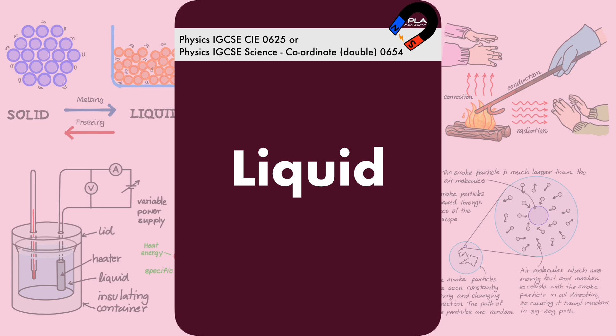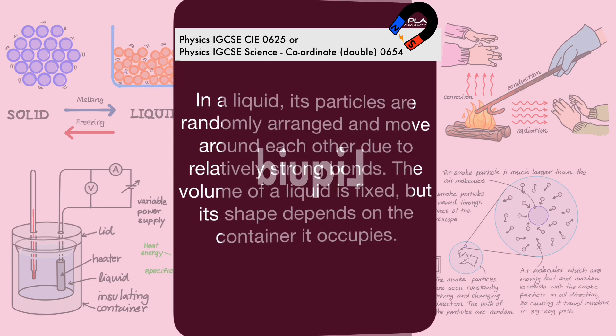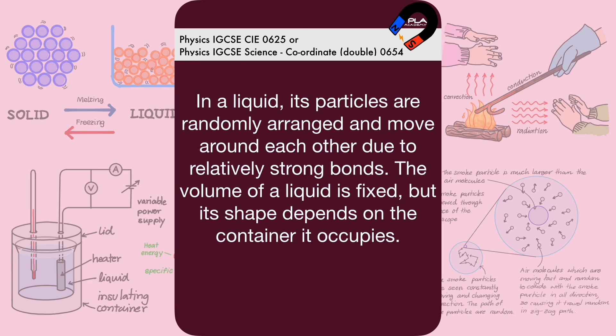Liquid. In a liquid, its particles are randomly arranged and move around each other due to relatively strong bonds. The volume of a liquid is fixed, but its shape depends on the container it occupies.